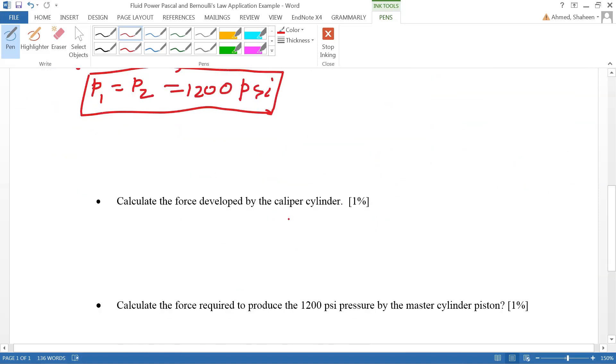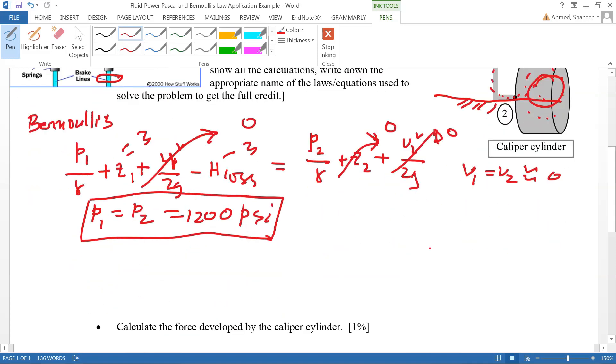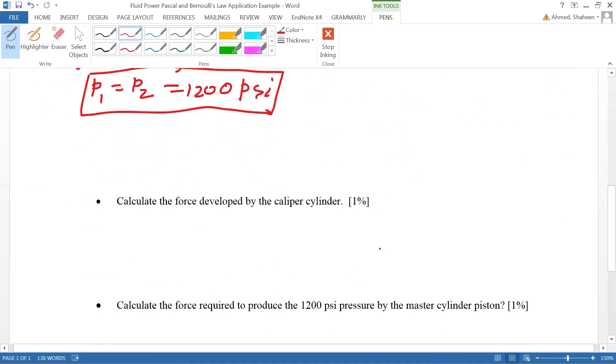Now it asks to calculate the force developed by the caliper cylinder. This is the caliper cylinder, this is the line. According to Pascal's law, the pressure at each of these points, if we ignore gravity, at every single point is going to be the same pressure.